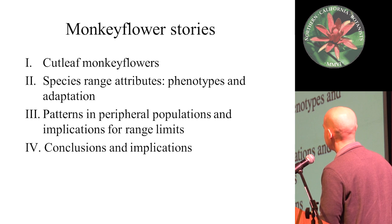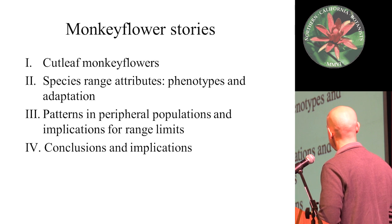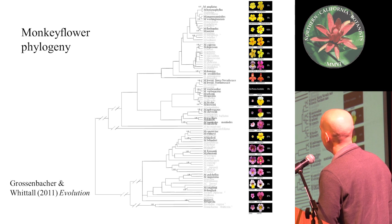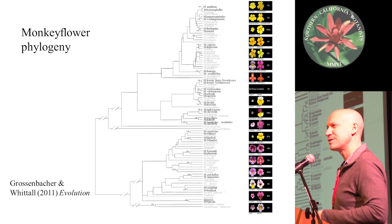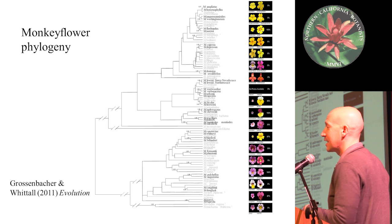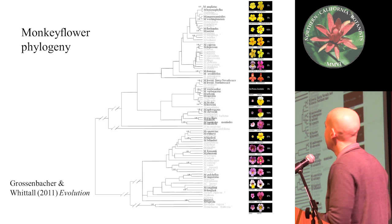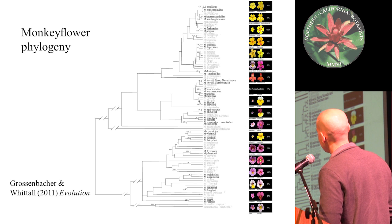Then I'll switch into patterns that we see in peripheral populations and what implications these may have for the causes underlying their range limits, and then have some conclusions. Here's a figure of the monkey flower phylogeny from Deanna Grossenbacher and Justin Whittall's paper in 2011. I put this here just to show that monkey flower is a great group to work in. In California there are over 50 species. It's highly diverse, its phylogeny is pretty well worked out, and there's a lot of real-time evolution going on. It's a fascinating group to work in.